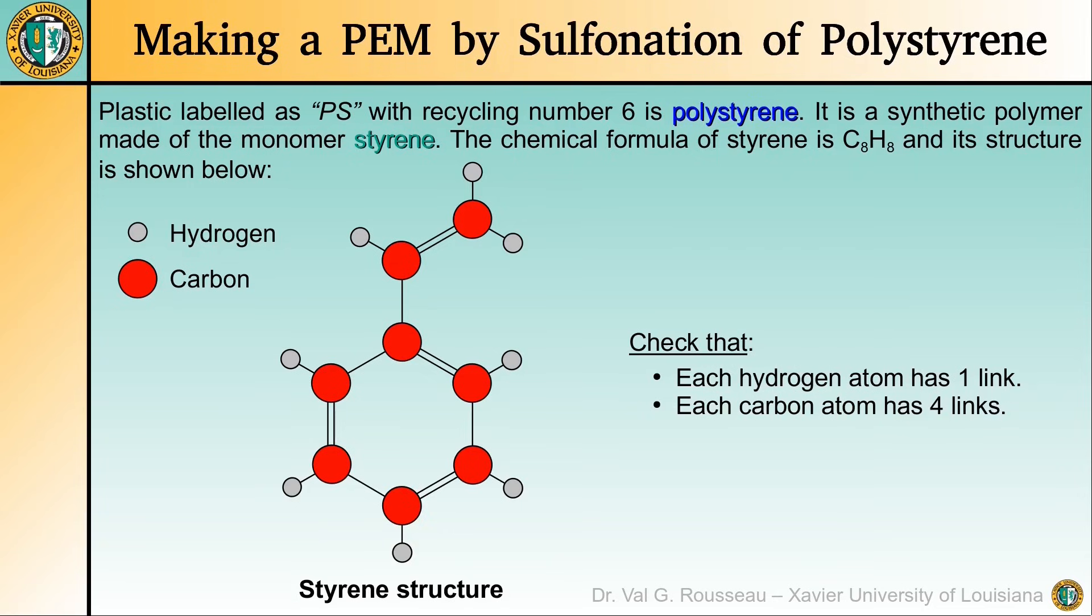The red circles represent carbon atoms and the gray circles represent hydrogen atoms. As is well-known, hydrogen has only one electron and carbon has four valence electrons. Thus each hydrogen atom must have one link and each carbon atom must have four links.